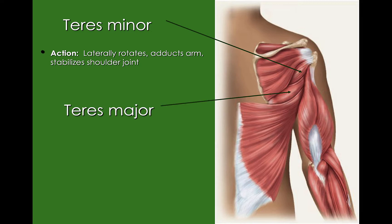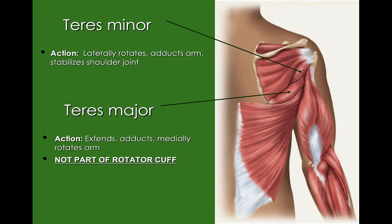We also have teres major, inferior to the teres minor. This is going to extend, adduct, and medially rotate our arms — a lot of the same movements and actions we saw with our rotator cuff muscles. But this is not part of the rotator cuff. It doesn't actually attach to the capsule of that shoulder joint where the other four muscles do. So even though teres major has the same actions, it isn't considered a rotator cuff muscle.